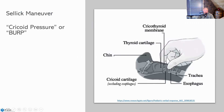The cricoid cartilage, thyroid cartilage, and cricothyroid membrane are key landmarks for cric pressure, the Sellick maneuver, and the BURP maneuver. The way to remember the anatomy is CT towards the head: the cricoid cartilage is on the bottom, the thyroid T cartilage is on top working towards the head. If you remember CT towards the head, you won't get your anatomy confused when locating landmarks.